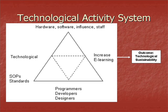Within the technological activity system, the desired outcome is to achieve technological sustainability. This might be defined as a system of financial, physical, virtual and intellectual resources that are capable of meeting present and future demands of technological needs. Tools available within the technological activity system relate to hardware and software, systems and procedures that ensure the security, reliability and scalability of the system. The technological activity system works within standards related to coding and interoperability, learning content and accessibility. The community includes programmers, developers, designers, hardware and software specialists. The division of labour, both vertically and horizontally, within this community varies depending on the nature and size of the organisation.